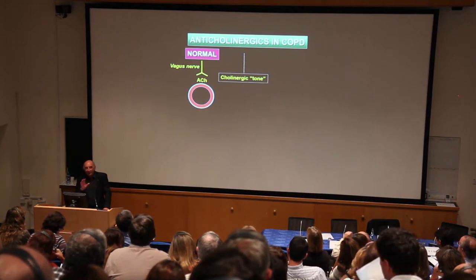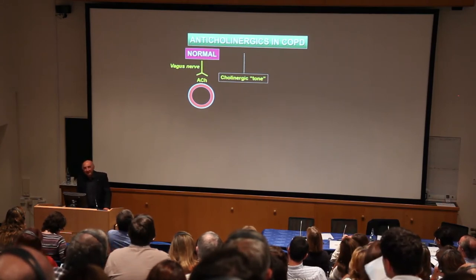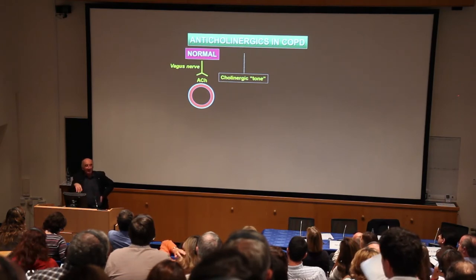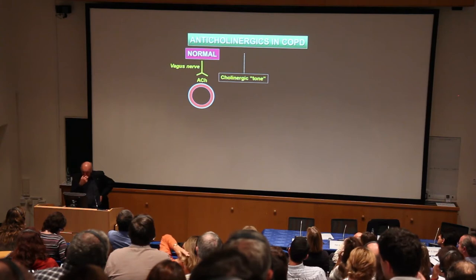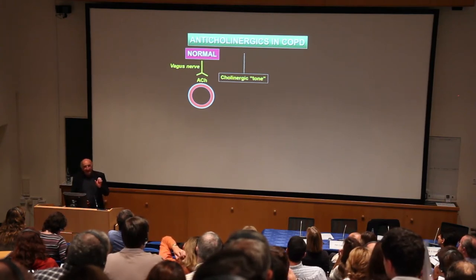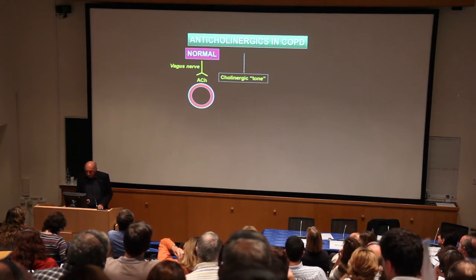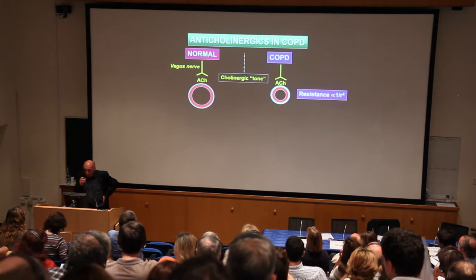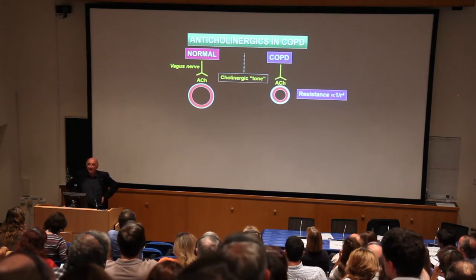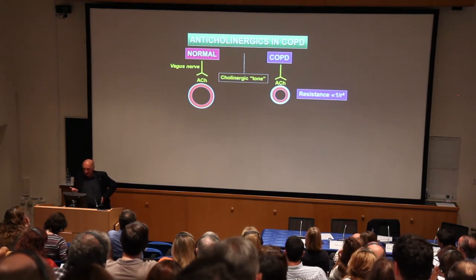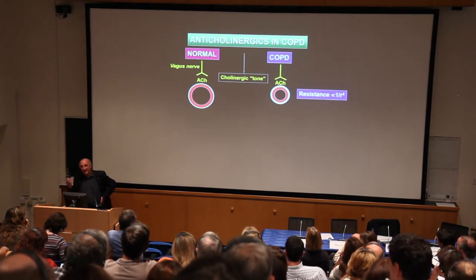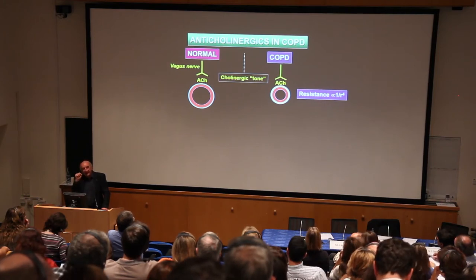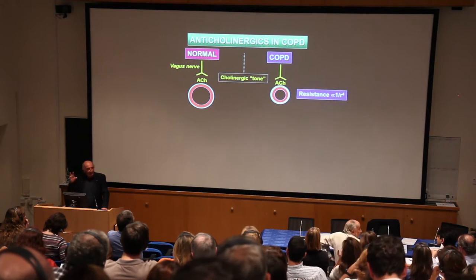What you have in all people is a certain degree of cholinergic tone — a tonic release of acetylcholine from nerve endings in the airway, leading to narrowing of the airway. But in COPD you also have cholinergic tone, which may even be increased. This has a big effect on airway resistance compared with normal people, because resistance is inversely related to the fourth power of the radius. So when you've got narrowing, even a tiny further contraction has a big effect on airway resistance.